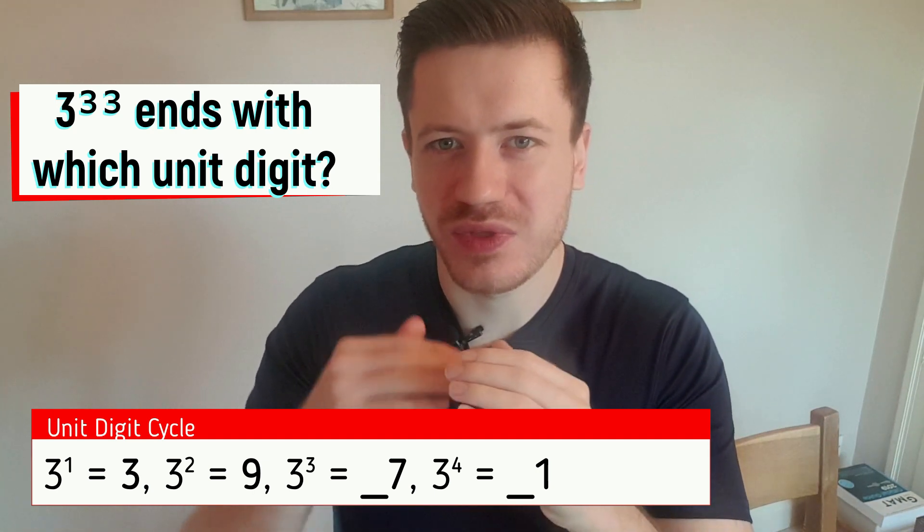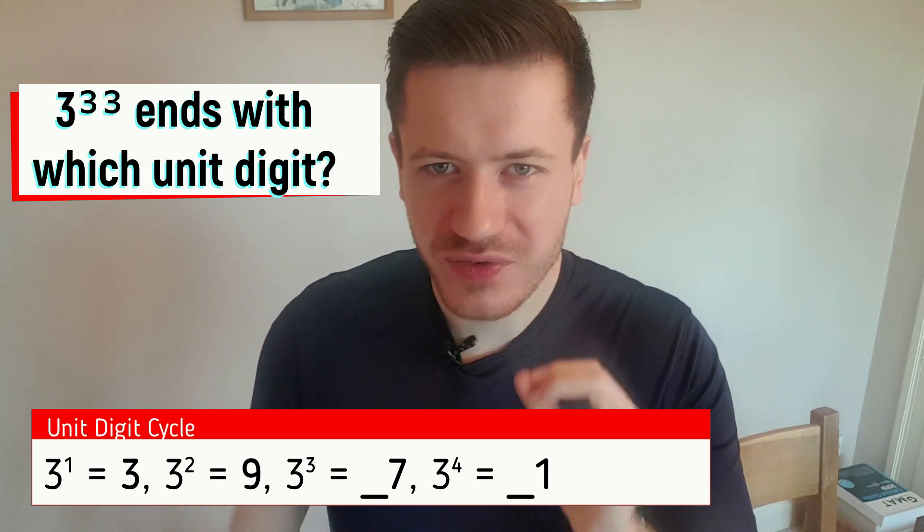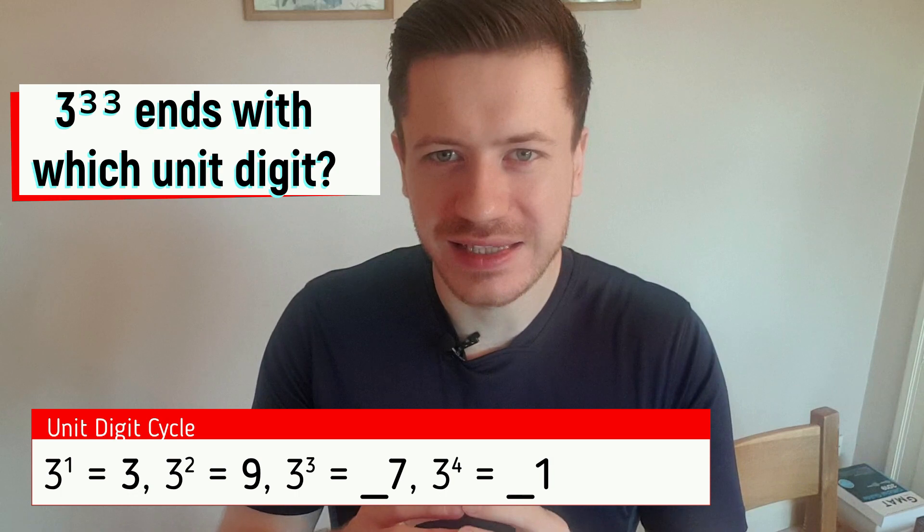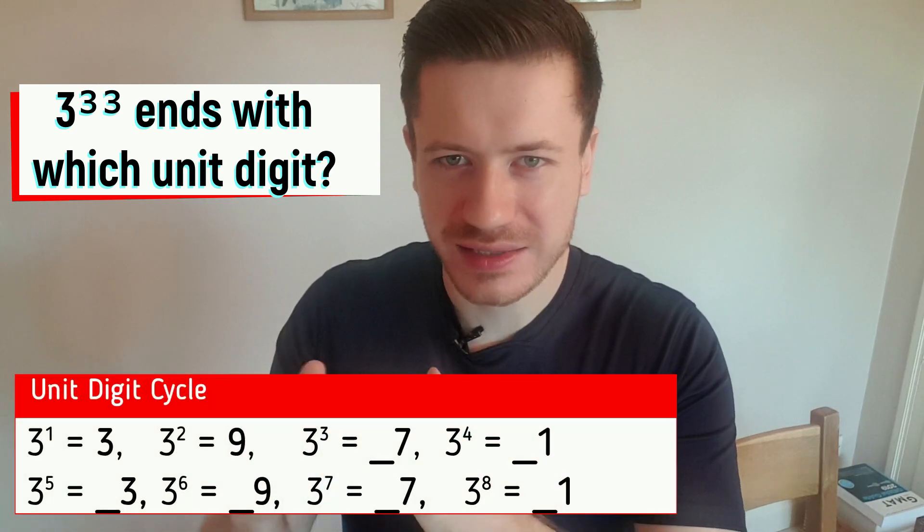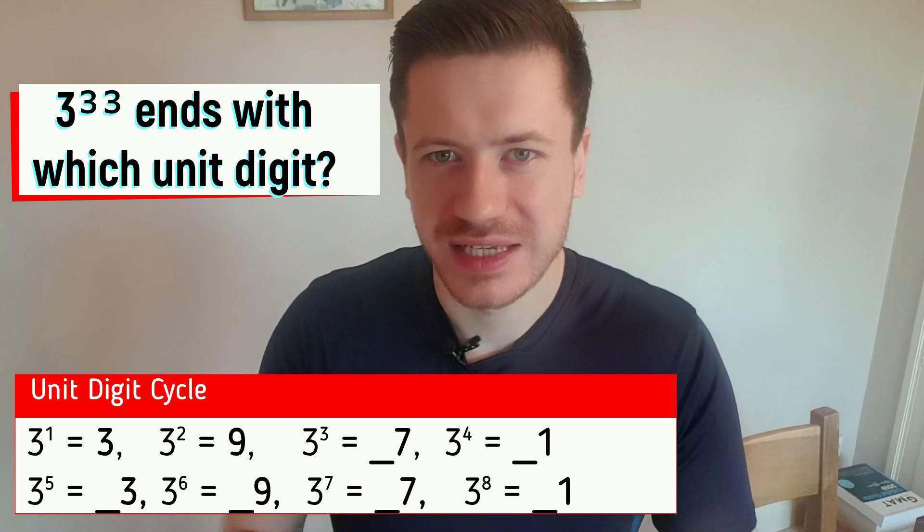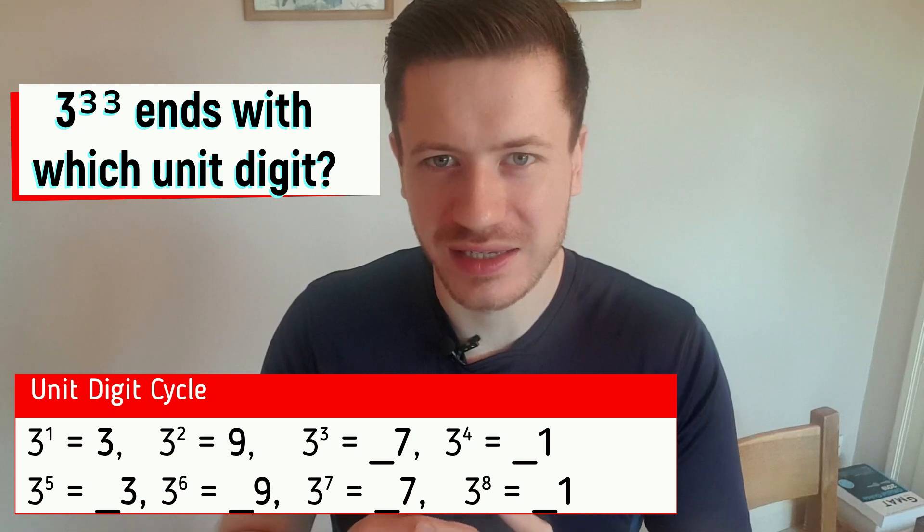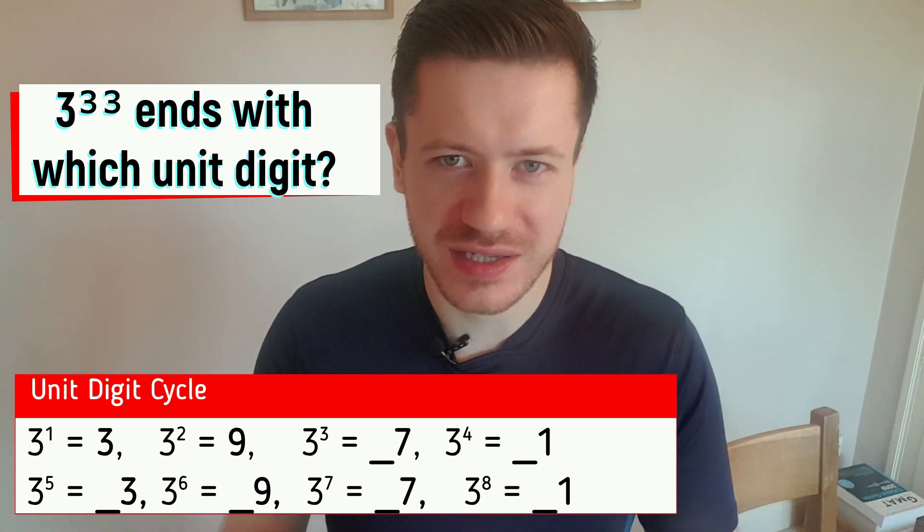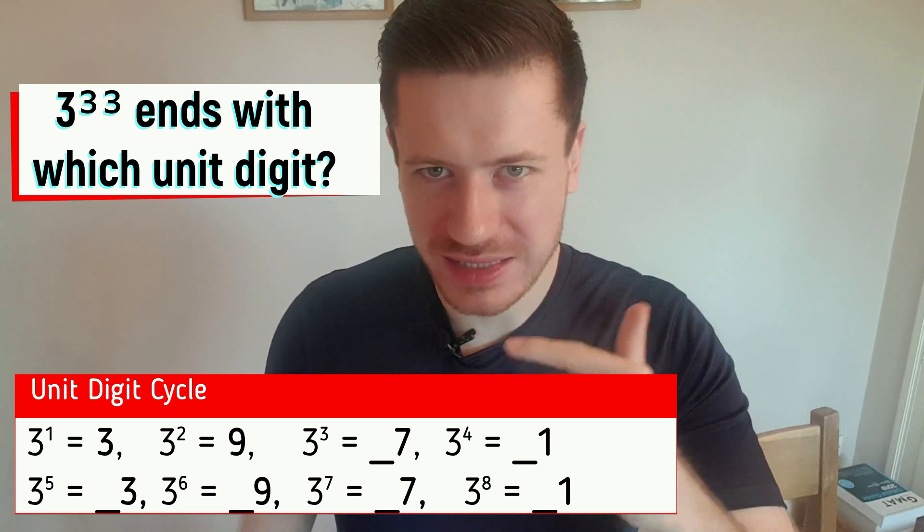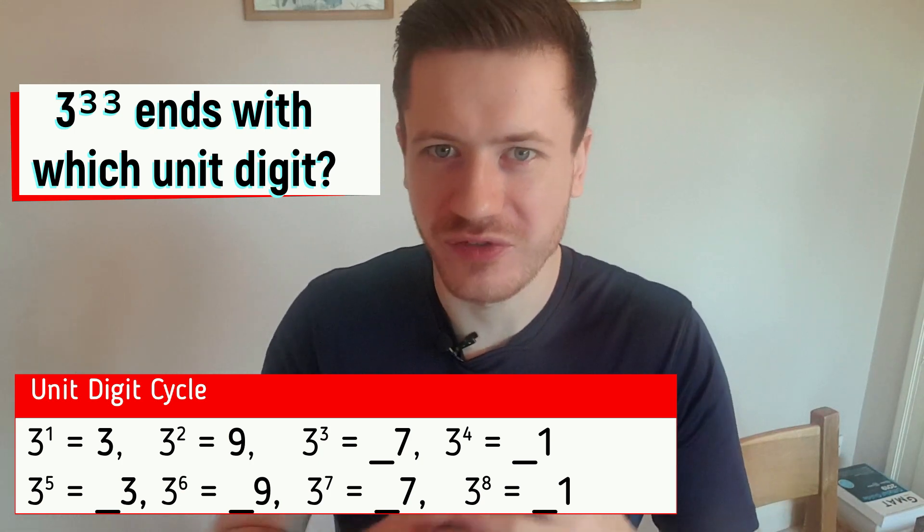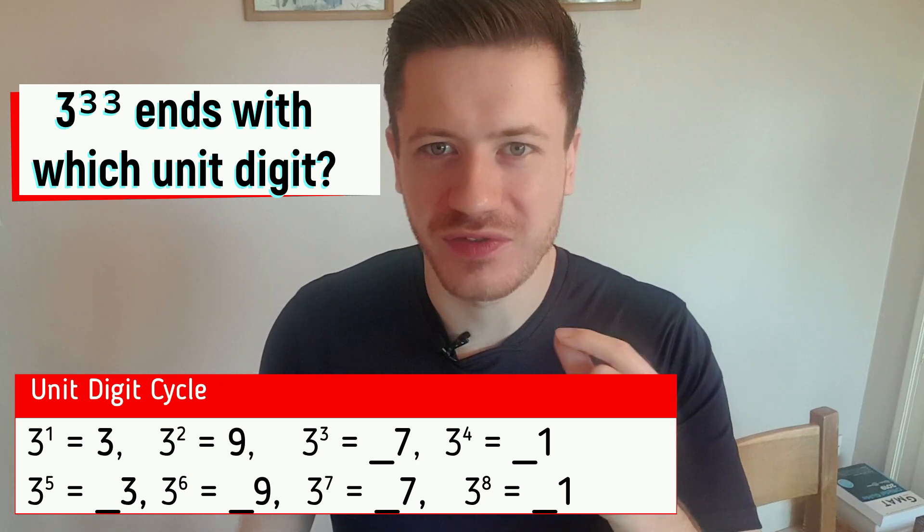And can you guess what the next power would be? What would three to the power of five end in? Well, if three to the power of four ended in a one, when we times that by three, the next answer, three to the power of five, is going to end in a three, because one times three is three. And we're back to the start of the cycle. The cycle is going to repeat again: three, nine, seven, one, three, nine, seven, one, forever. We have now found the unit digit cycle for the number three.